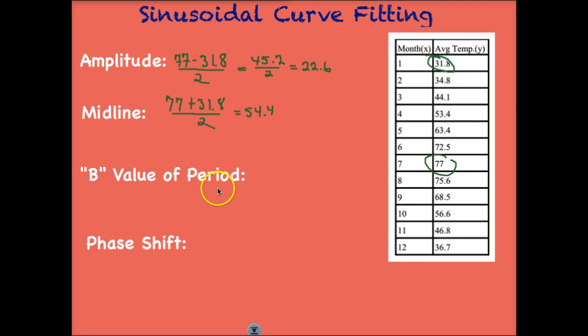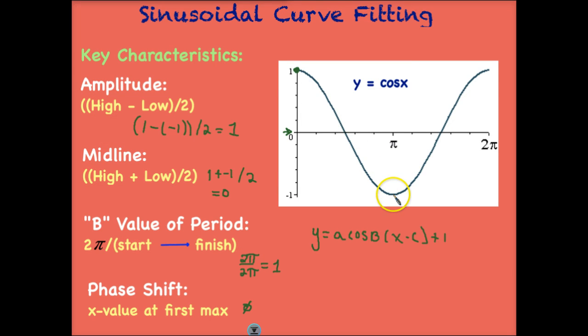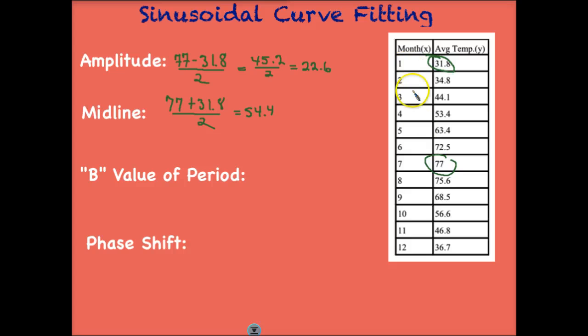How about the B value of the period? Well, remember, we're going to take the start and go to the finish. So we're looking at our months here. We start at 1, and we go to 7. But this is just the low to the high. So if we look back on this previous one, this is going from a low to a high. That's not quite a full period. That's half of a period. So we have to think about that. If we go from the low to the high, that's 6 months. That's half a period. So then we would need to multiply that by 2.